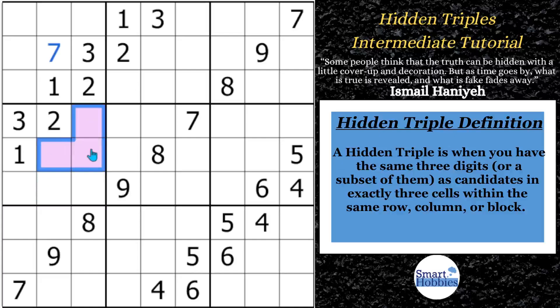Whenever you have the same three digits or a subset of them as candidates in exactly three cells within the same row, column, or block, this is called a hidden triple.